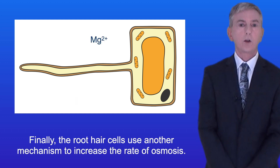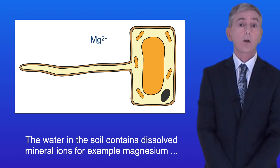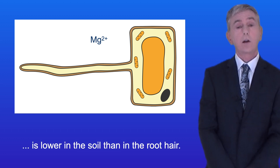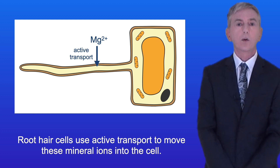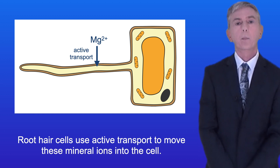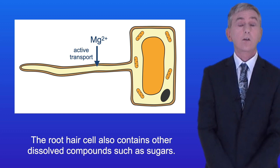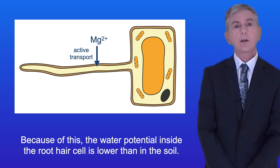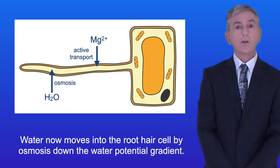Finally, the root hair cells use another mechanism to increase the rate of osmosis. The water in the soil contains dissolved mineral ions, for example magnesium, which plants use to make chlorophyll. However, the concentration of these mineral ions is lower in the soil than in the root hair, so root hair cells use active transport to move these mineral ions into the cell. The root hair cell also contains other dissolved compounds such as sugars, so the water potential inside the root hair cell is lower than in the soil. So water moves into the root hair cell by osmosis, down the water potential gradient.